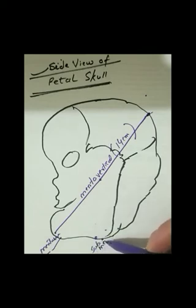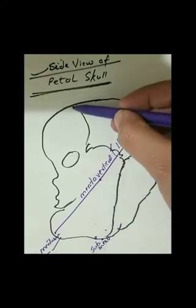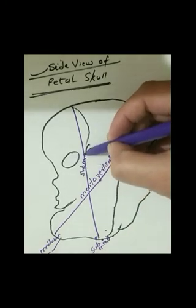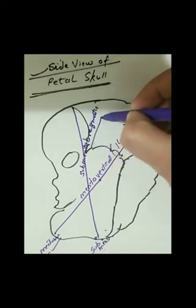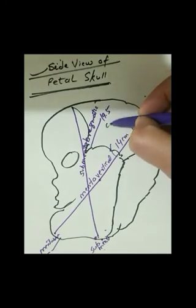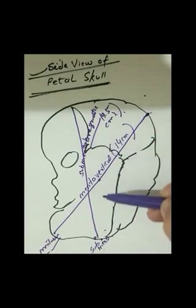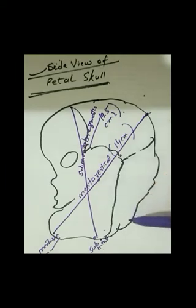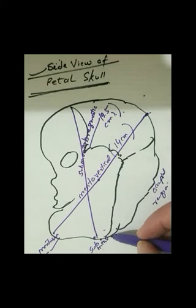That is the occipitomentum — from occiput to mentum. This point is the sub-mentum point. From sub-mentum to bregma is the sub-mento-bregmatic diameter, which is 9.5 centimeters. The largest diameter is the mento-vertical or occipitomentum, which is 14 centimeters. The sub-mento-bregmatic is 9.5 centimeters.